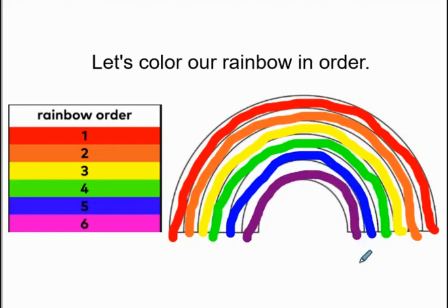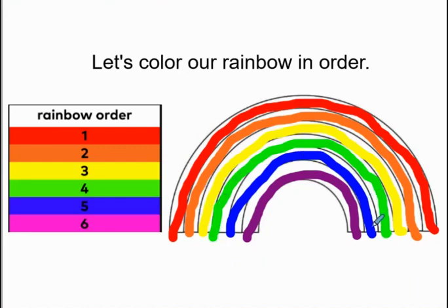We made our rainbow! What color did we use first? Red. What color did we use second? Orange. What color did we use third? Yellow. What color did we use fourth? Green. What color did we use fifth? Blue. And what color did we use sixth? Purple.